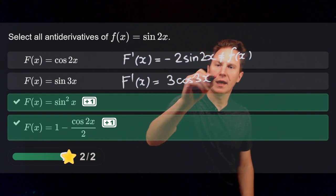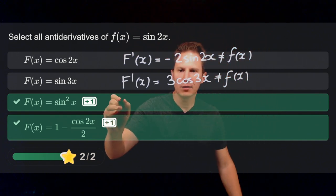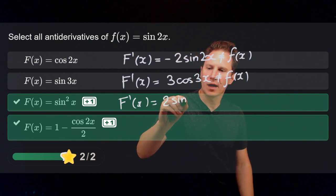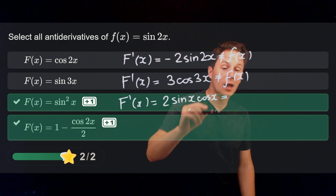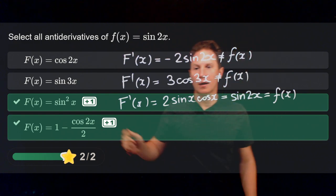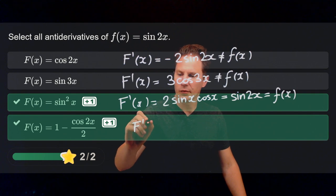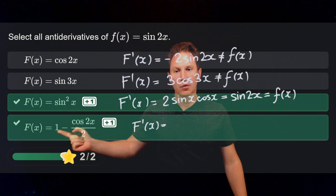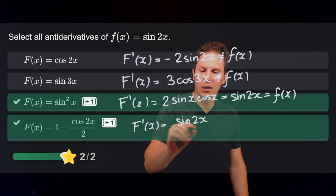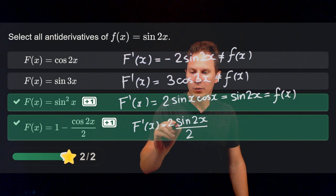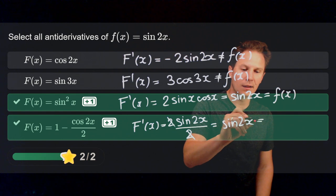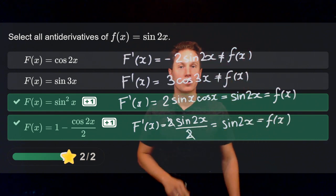For the second function, the sine of 3x, its derivative is 3 times the cosine of 3x — again not equal to little f of x. The derivative of sine squared of x, using the chain rule, gives 2 times sine of x times cosine of x, which by the double angle formula equals sine of 2x for all x — hence this is an antiderivative. For the last function, the constant differentiates to zero, and differentiating negative cosine of 2x gives sine of 2x times 2, which is cancelled by the denominator, giving sine of 2x — indeed equal to little f of x. I hope you enjoyed this video and I'll see you in the next one.